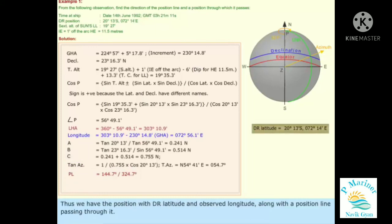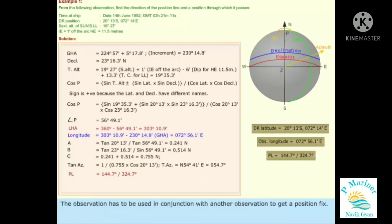We have the position with DR latitude and observed longitude, along with a position line passing through it. The observation has to be used in conjunction with another observation to get a position fix.